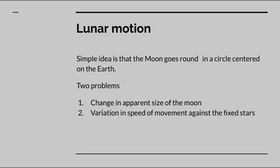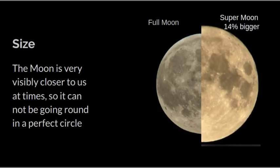Let's look at the issue of size first. At certain times in its orbit the Moon is visibly closer to us. When you get what's called a supermoon, it's 14% bigger than a full Moon that is not in the supermoon position. So if it is visibly closer to us, it can't be going round in a perfect circle. So the path can't be circular. It must have some non-circular element to it.